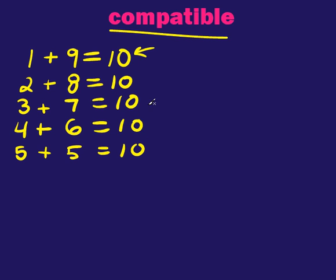5 plus 5 gives you 10. Notice all these are compatible. Now we go back. 6 plus 4 equals 10. Wait a minute, that's the same as this one right here. So we don't need to do any more.